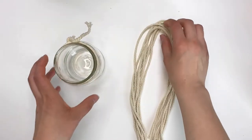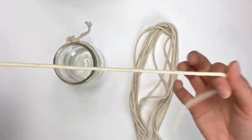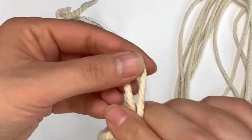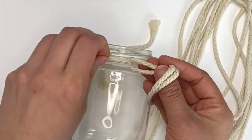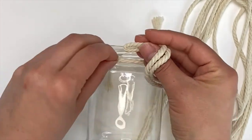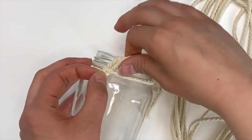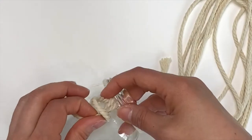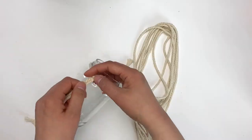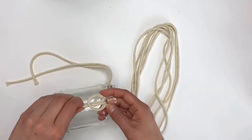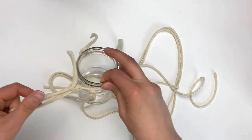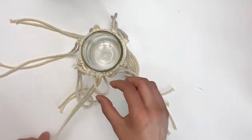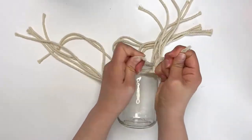Once all of your cords are cut, you're going to start attaching them to the macrame cord that's tied around the rim of the jar. Use a lark's head knot to attach your cords. So what you want to do is fold your cord in half and then take the loop end and put it through the rim, and then put your fingers through the little loop, take the ends of the cord and pull. As you're attaching your cords, make sure that you move them around so that they're spaced evenly around the jar.